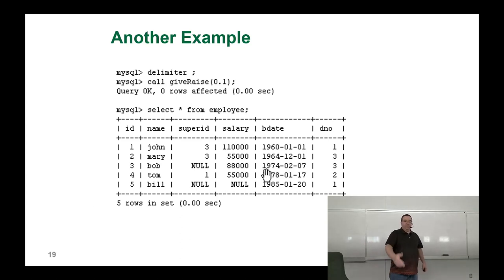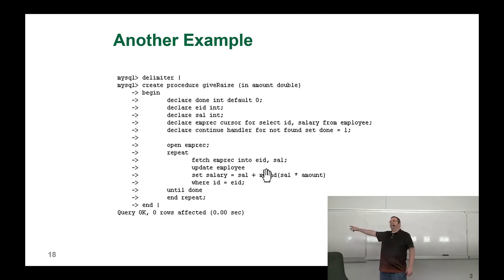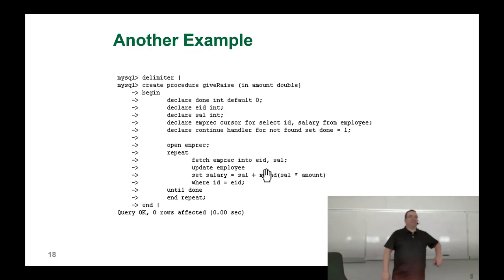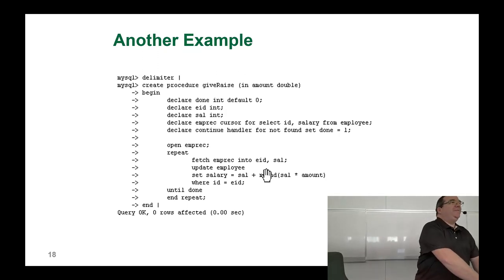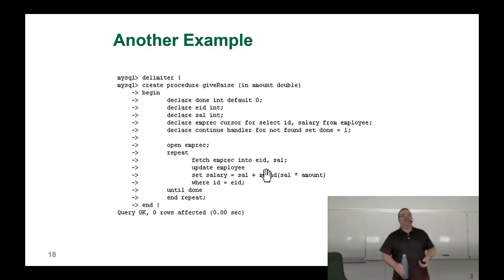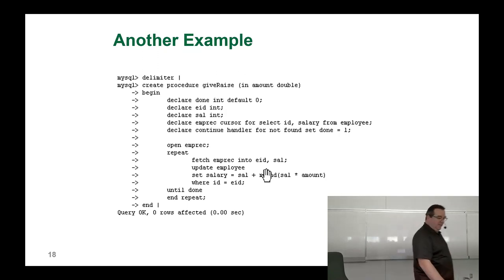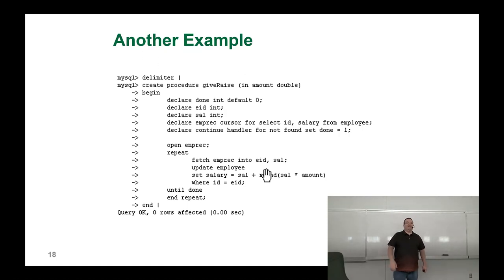This could have been written as a single SQL statement without a cursor — just update employee set salary equal to salary plus... without needing to know who each employee is. But this example shows how to do a multi-column fetch. A proper version of this function would not just update it — it would also do an entry in a log table somewhere for audit purposes: old salary, new salary, date changed, and who changed it. You don't want the database administrator giving everybody a raise for fun — there's a reason audit tables exist.